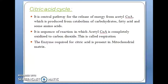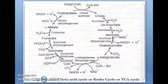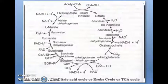Now we see the citric acid cycle. It is a central pathway for the release of energy from acetyl-CoA, which is produced from catabolism of carbohydrates, fatty acids, and some amino acids. It is a sequence of reactions in which acetyl-CoA is completely oxidized to carbon dioxide — this process is called respiration. The enzymes required for the citric acid cycle are present in the mitochondrial matrix. The first reaction of the citric acid cycle is the synthesis of citrate by condensation of acetyl-CoA with oxaloacetate, catalyzed by citrate synthase. The second reaction: citrate is isomerized to isocitrate by the enzyme aconitase.